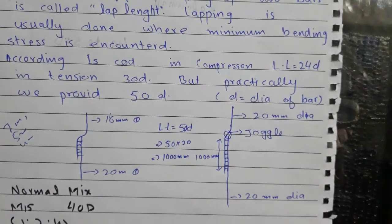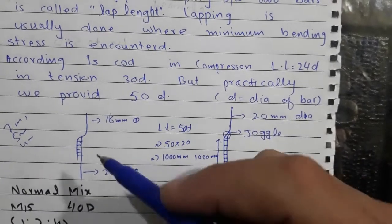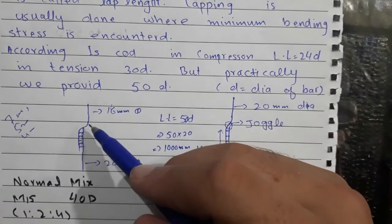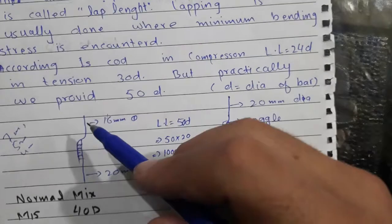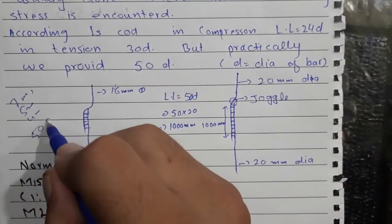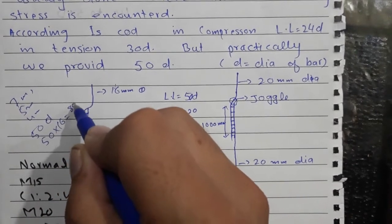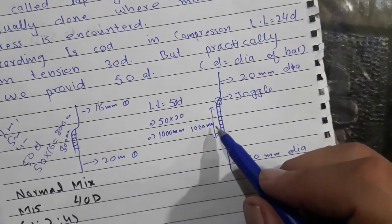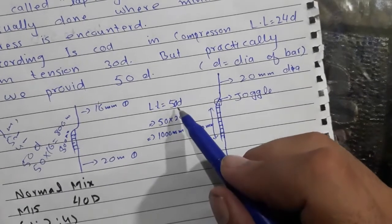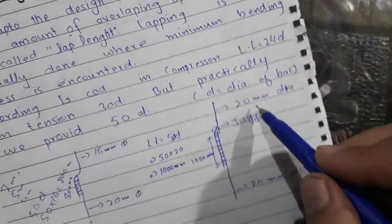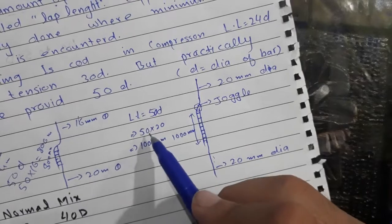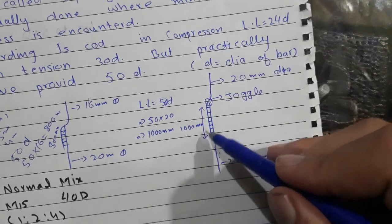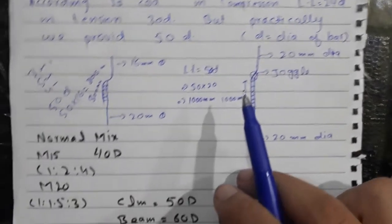In a multi-story building, as we go higher, the steel bar diameter becomes smaller. For example, the diameter of the lower bar is 20 millimeters and the upper bar is 16 millimeters. We take the dia of the smaller bar — 50d — so 50 multiplied by 16 equals 800 millimeters. So here the lap length is 800 millimeters. The earlier example of 1000 millimeters came from using a 20mm bar: 50 multiplied by 20 equals 1000 millimeters.